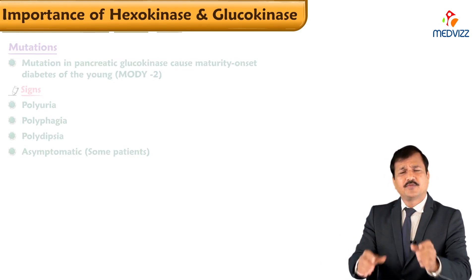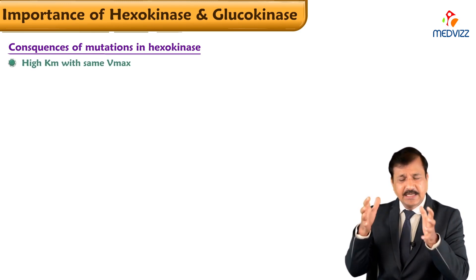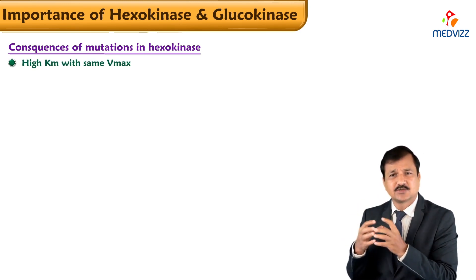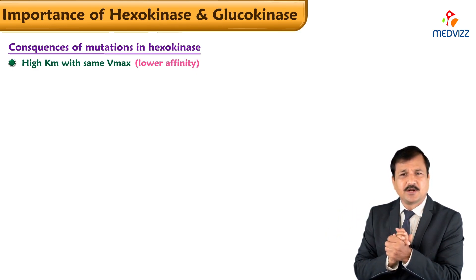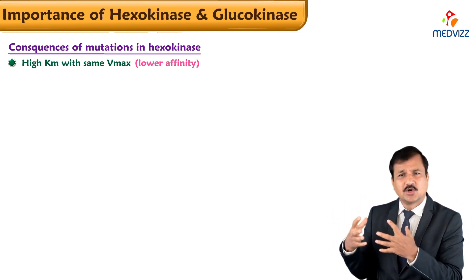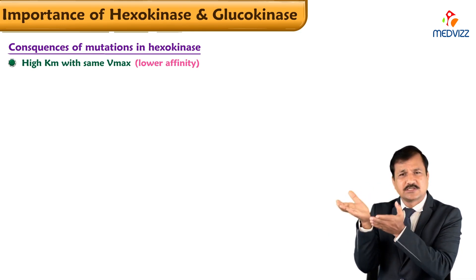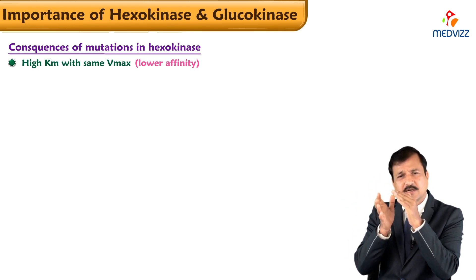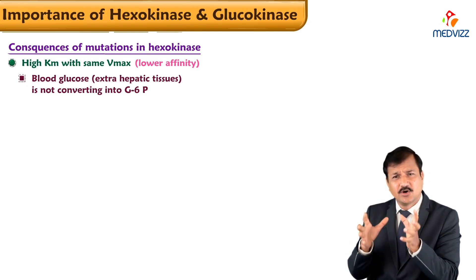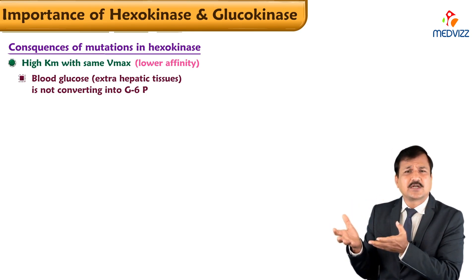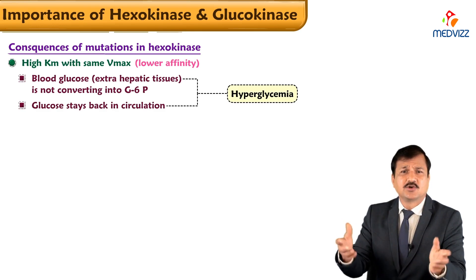Let us consider changes in the kinetic characteristics of hexokinase and glucokinase. If there is an increase in the KM of hexokinase with the same Vmax, hexokinase becomes a lower affinity enzyme. It will not take up glucose in skeletal muscle, adipose tissue, and other tissues that need glucose. Even though glucose is present in the blood, it is not converted into glucose-6-phosphate because of the higher KM — meaning lower affinity — and glucose stays in the circulation, leading to hyperglycemia.